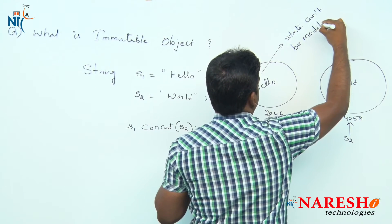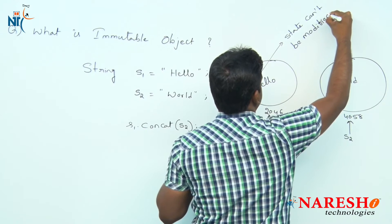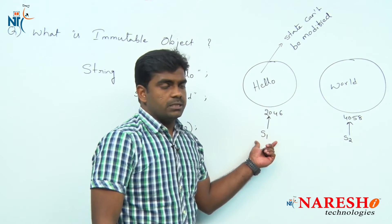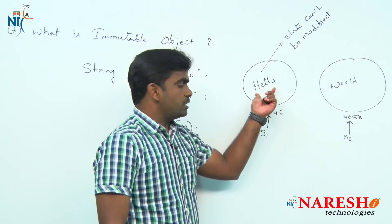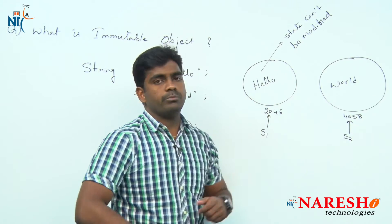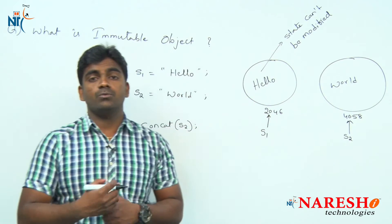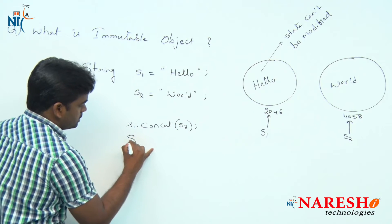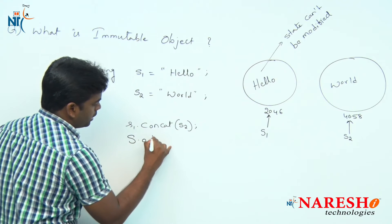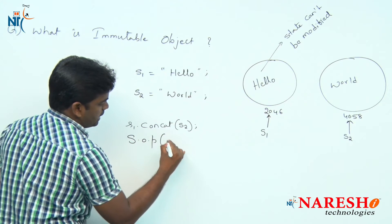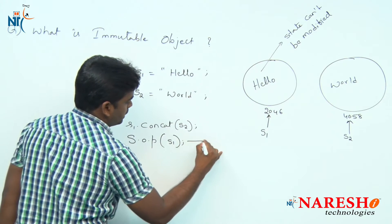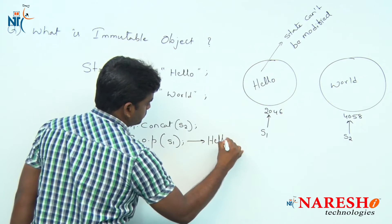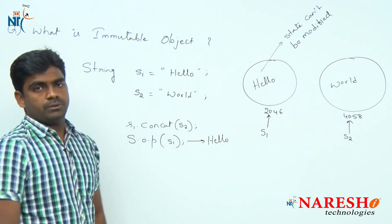But here the state cannot be modified, because a String object is an immutable object — its state cannot be modified. So if after performing this concat operation you try to print s1, it will print 'hello' only.